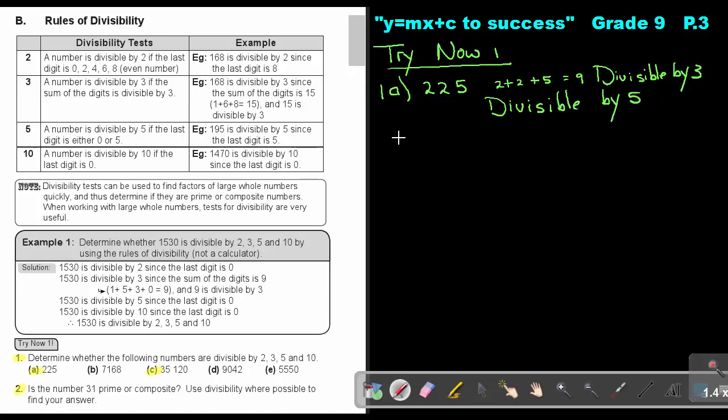Let's look at number C. The number is 35120. It's divisible by 2 because it's ending with 0. Let's test for 3: 3 plus 5 plus 1 plus 2 plus 0, it's 8, 9, 10, 11. No, 11 is not divisible by 3, so it's not divisible by 3. Is it divisible by 5? Yes, because the last digit is 0, so it's also divisible by 5. Is it divisible by 10? Yes, because the last digit is 0. So this number is divisible by 2, 5, and 10.